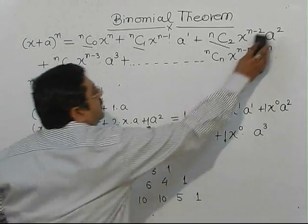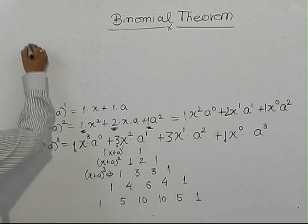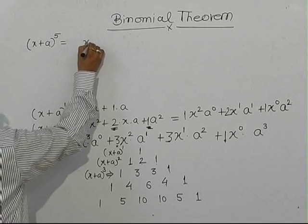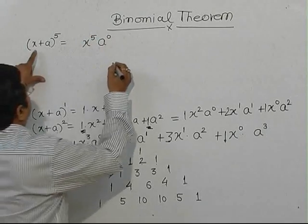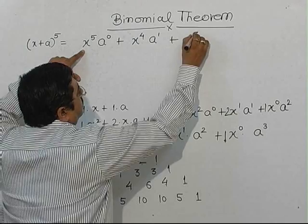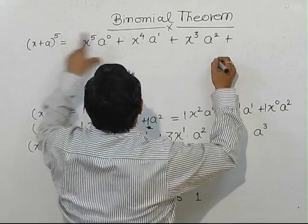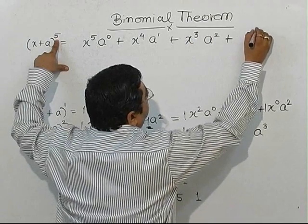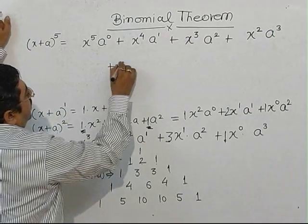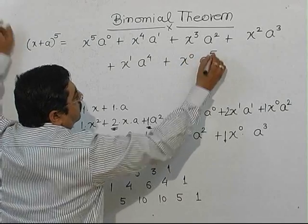Say for example, you want to expand (x + a)^5. The method: start with highest power of x = 5, lowest power of a = 0. Decrease x's power by 1, increase a's power by 1: x^4·a^1 — the sum should be 5. Then x^3·a^2 — sum is 5. Then x^2·a^3, then x^1·a^4, then x^0·a^5.